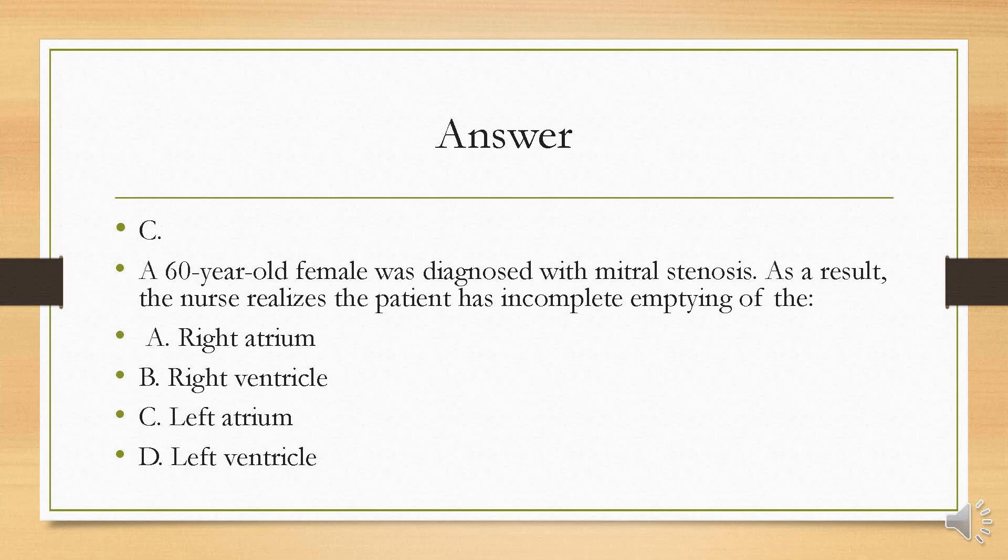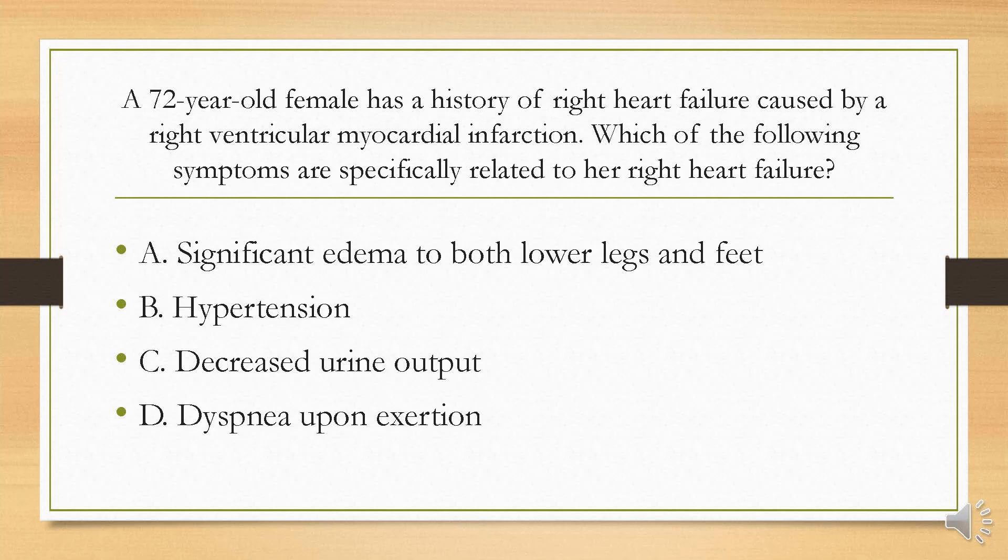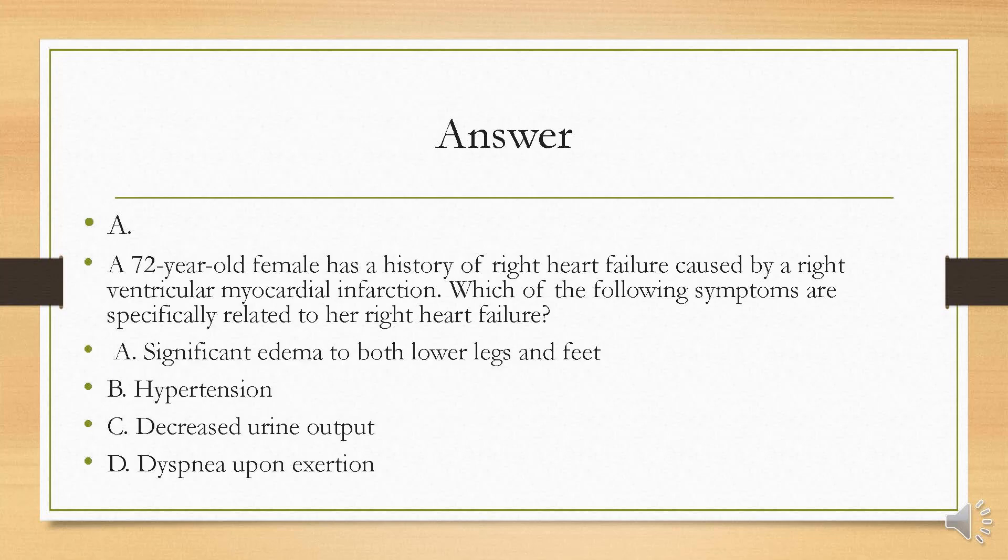A 72-year-old female has a history of right heart failure caused by a right ventricular myocardial infarction. Which of the following symptoms are specifically related to her right heart failure? Is it A, significant edema to both lower legs and feet; B, hypertension; C, decreased urine output; or D, dyspnea upon exertion? Your answer is A. If you review the pattern of blood flow through the heart, that will help you answer these questions.